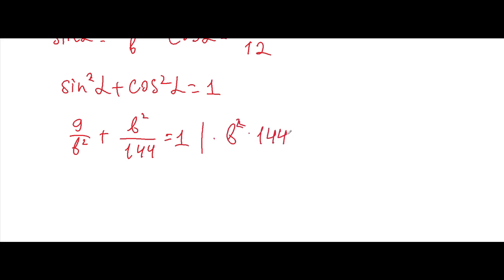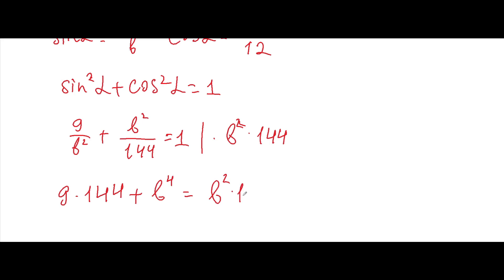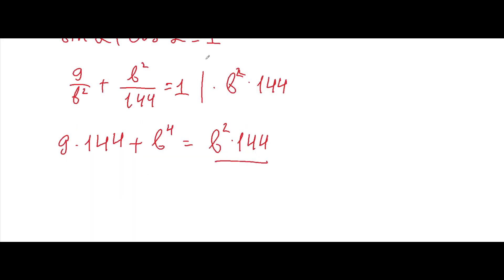After multiplying, the first term gives nine times 144, plus B to the fourth power, equal to B squared times 144. We can subtract from both sides and we get: B to the fourth minus 144 times B squared plus nine times 144 equals zero.